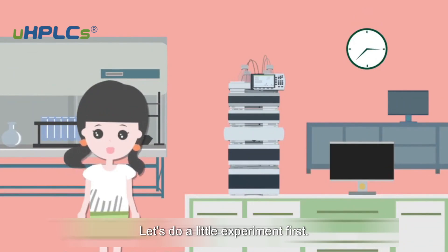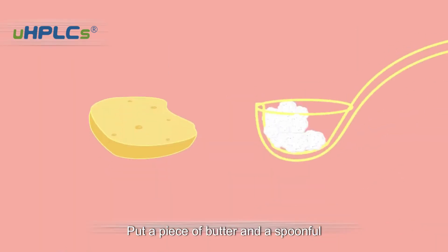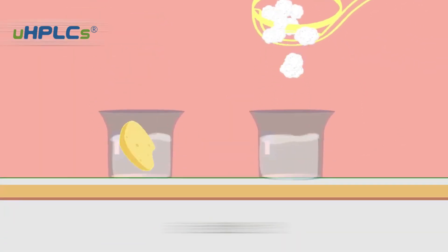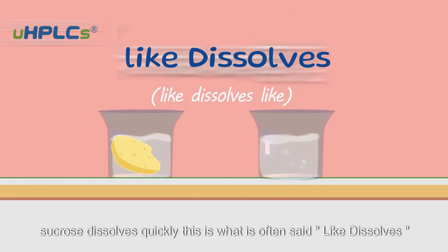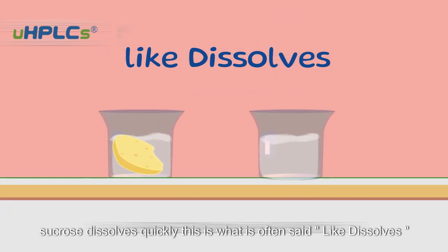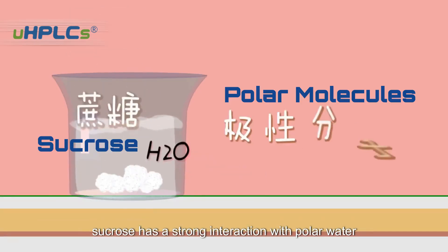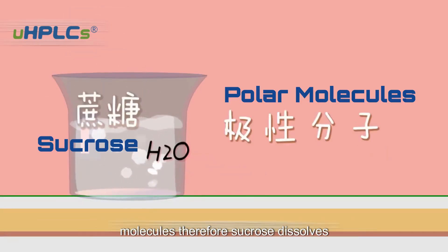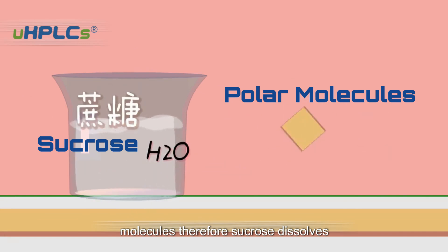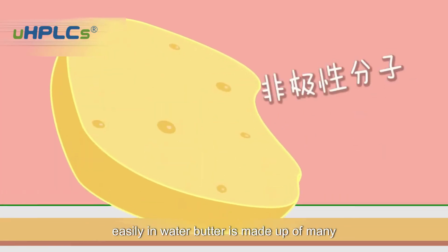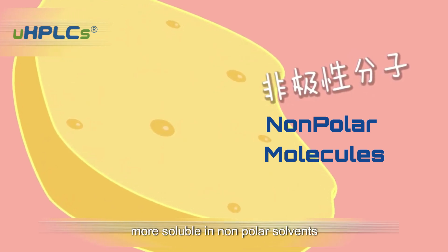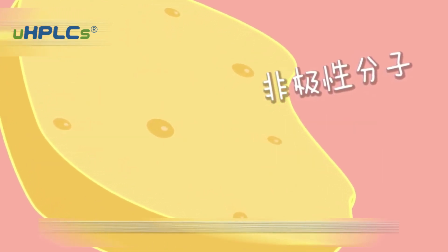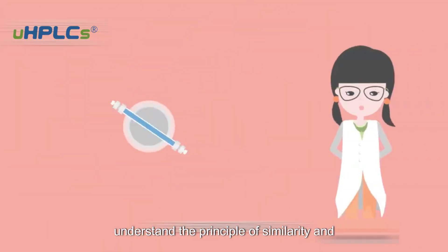Let's do a little experiment first. Put a piece of butter and a spoonful of cane sugar into the water. We will find that butter is difficult to dissolve, while sucrose dissolves quickly. This is the principle of 'like dissolves like.' Sucrose has a strong interaction with polar water molecules, so sucrose dissolves easily in water. Butter is made up of many nonpolar molecules, and is more soluble in nonpolar solvents.